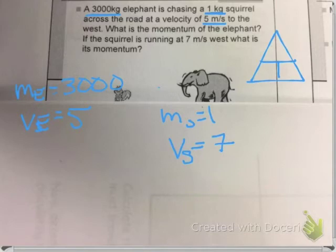So momentum is equal to mass times velocity. Since mass and velocity are going to be multiplied by each other, I'm going to put them next to each other in the triangle. Mass and velocity are next to each other because they get multiplied by each other. And then momentum, my little p, goes on the top.